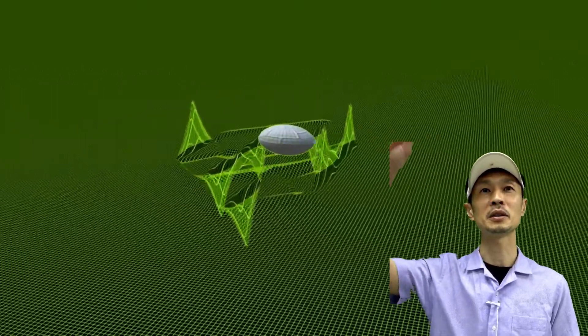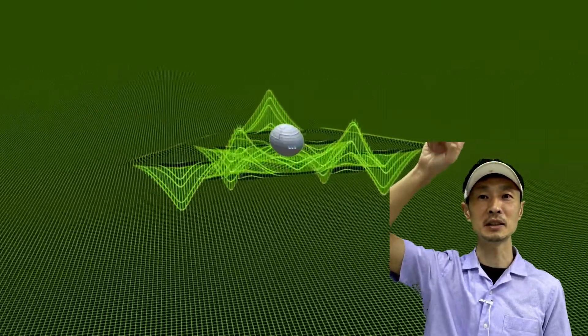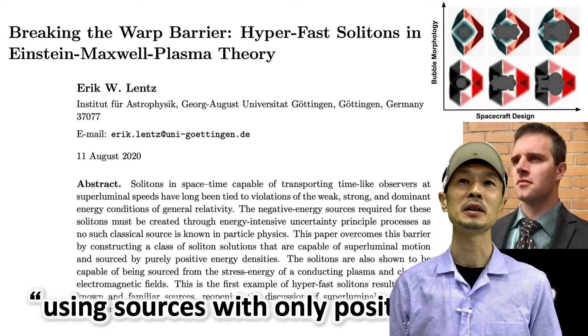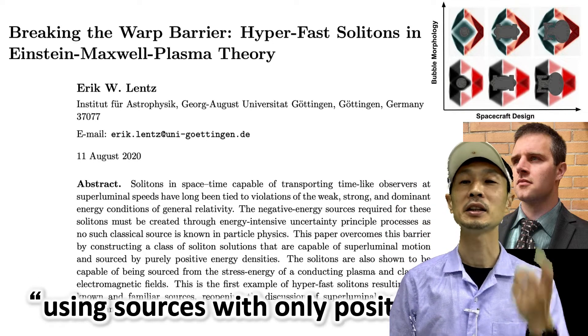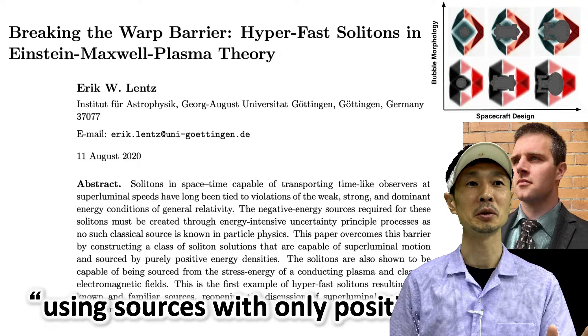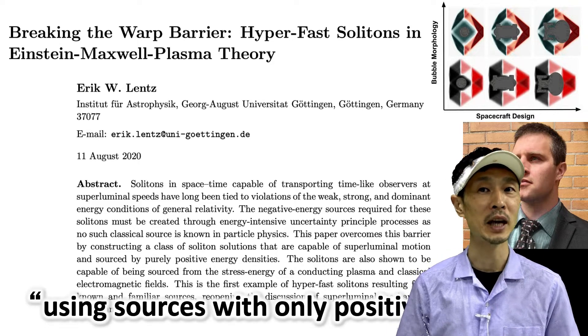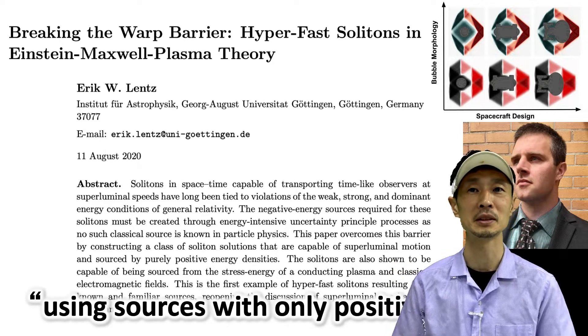An example of the warp field is something like this. The important point is he can create this only using sources with positive energy, which means known substances.